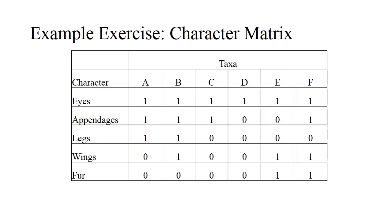Here we have our taxa which are A, B, C, D, E and F, and our characters are eyes, appendages, legs, wings and fur.